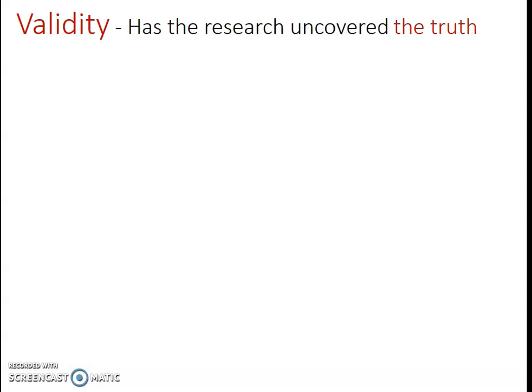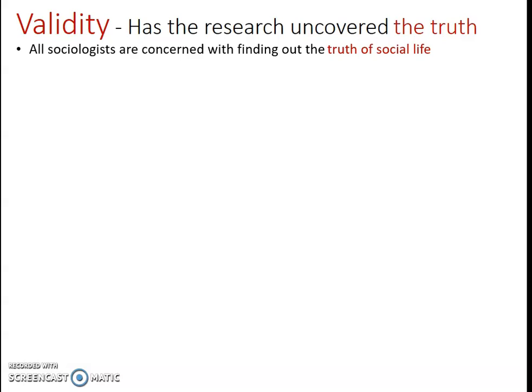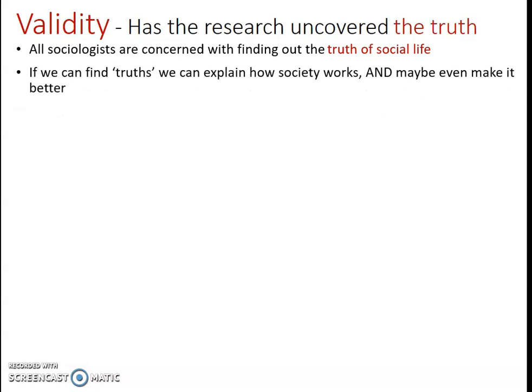The next issue is validity — essentially the question of whether the research has actually uncovered the truth. All sociologists want to find out the truth of social life, though different sociologists have different views on what counts as truth. We want to find these truths because they help us understand how society works, and we can use those discoveries to identify patterns and make society better.